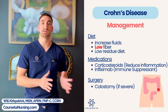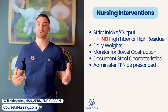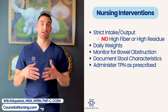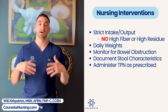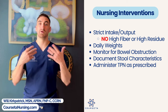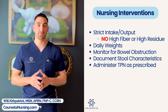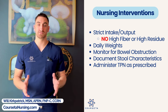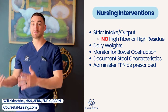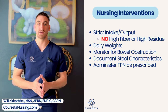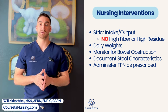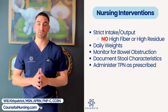Key nursing interventions include strict intake and output monitoring — especially watching output for signs of GI bleeding — and monitoring intake to ensure a low fiber, low residue diet with adequate hydration. Patients are on daily weights. Nurses must monitor for bowel obstruction: hypoactive bowel sounds progressing to absent bowel sounds should be reported to the physician immediately. In severe cases requiring complete bowel rest, TPN — total parenteral nutrition administered intravenously — may be given so nothing passes through the GI system.